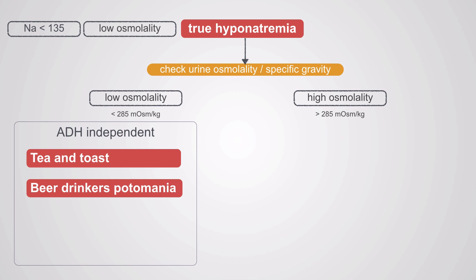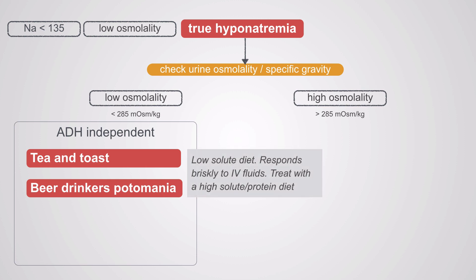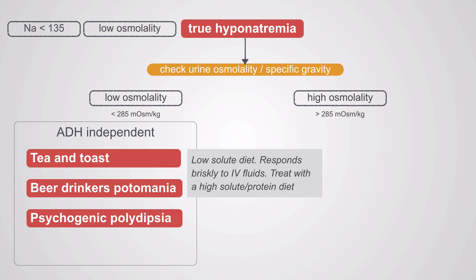ADH-independent disease includes tea and toast syndrome and beer drinker's potomania. These are due to low-solute diets and respond quite briskly to IV fluids; you want to treat them with a high-solute or high-protein diet. Psychogenic polydipsia involves compulsive water drinking — it seems like a silly disease but these are the patients that die of hyponatremia and need acute therapy.